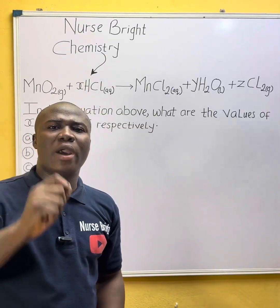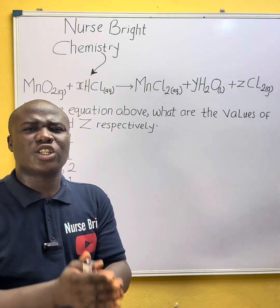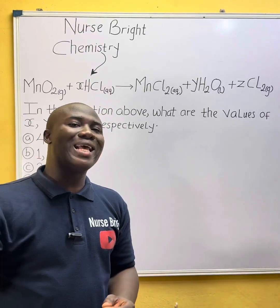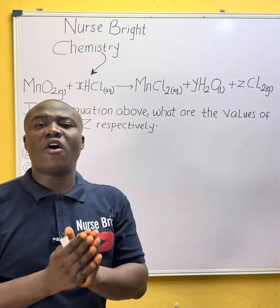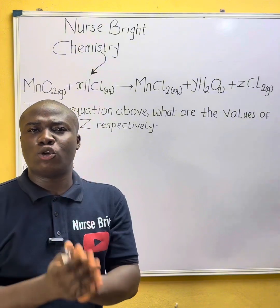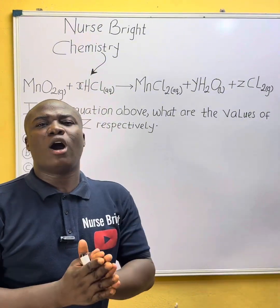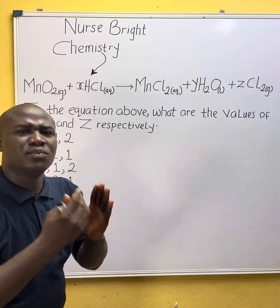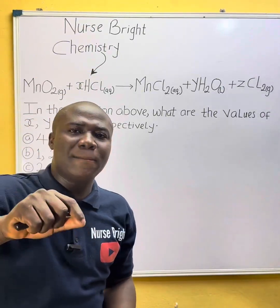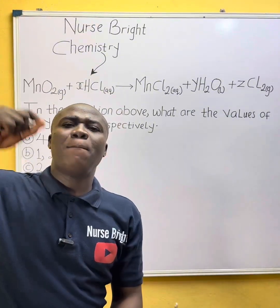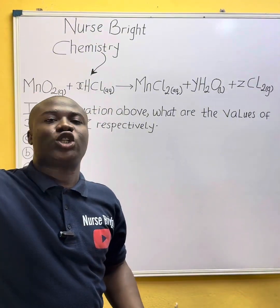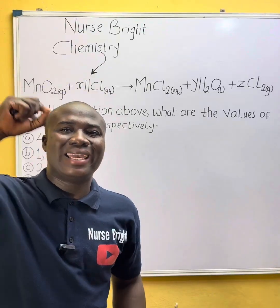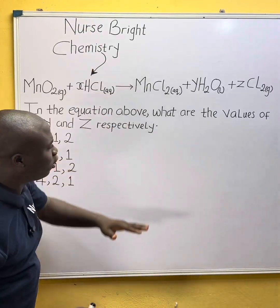Pay attention to the way I'll be solving this question, and at the end I'll be giving you your own practice question to solve and provide the answer in the comment section. In chemistry, before you start solving any question, it is very vital to understand properly the concept that the question is from. This question is on a vital aspect in chemistry which deals with balancing chemical equations or reactions. As a science student, it is very important for you to know how to balance chemical reactions.